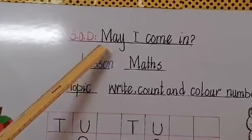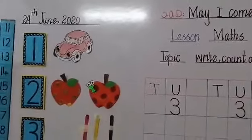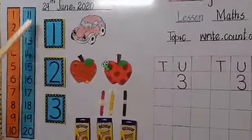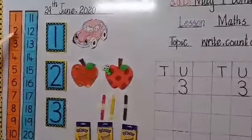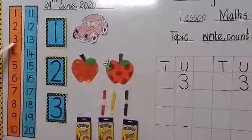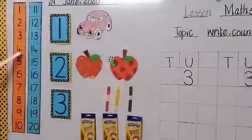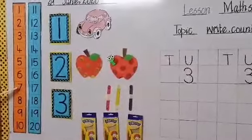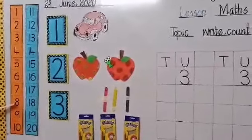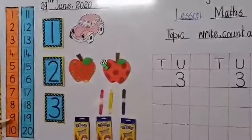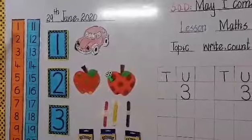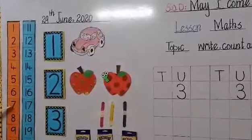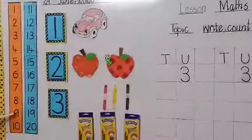Today we are going to revise numbers from 1 to 10 and then revise all the previous numbers. Let's count from 1: 1, 2, 3. What comes after 3? 4. What comes after 4? 5. What comes after 5? 6. Very good. What comes after 6? 7. And what comes after 7? 8. What comes after 8? 9. 10. Say it again: 1, 2, 3, 4, 5, 6, 7, 8, 9, 10.